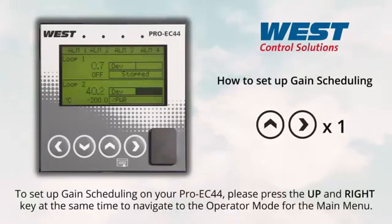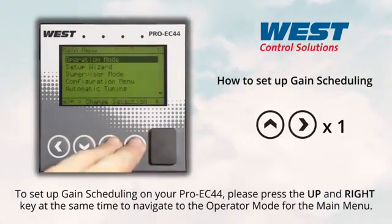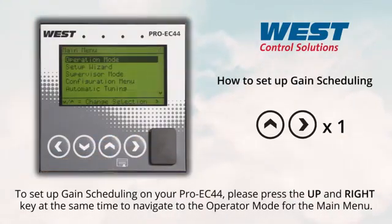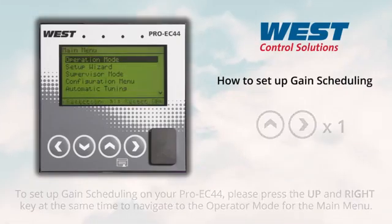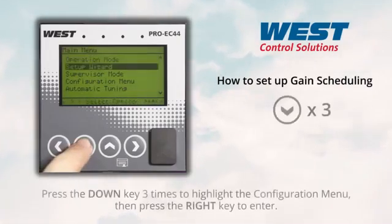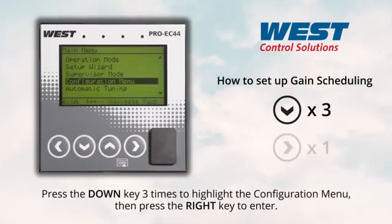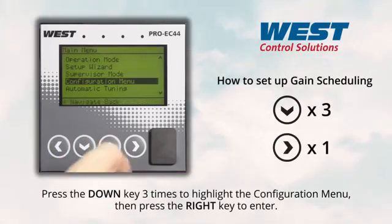To set up gain scheduling on your ProEC44, please press the up and right key at the same time to navigate to the operator mode for the main menu. Press the down key three times to highlight the configuration menu, then press the right key to enter.